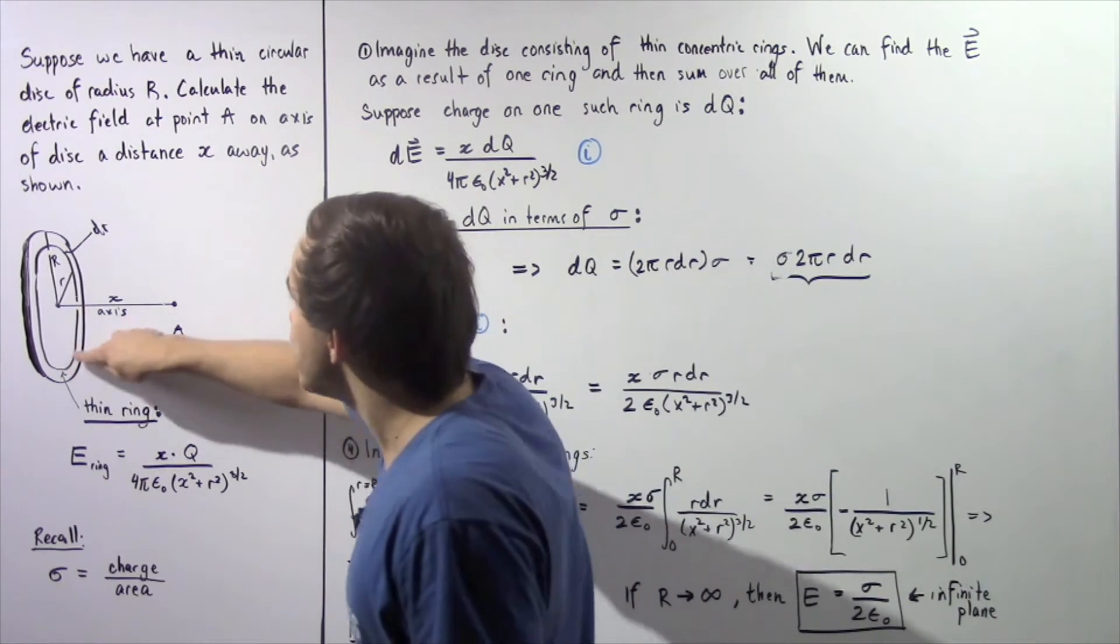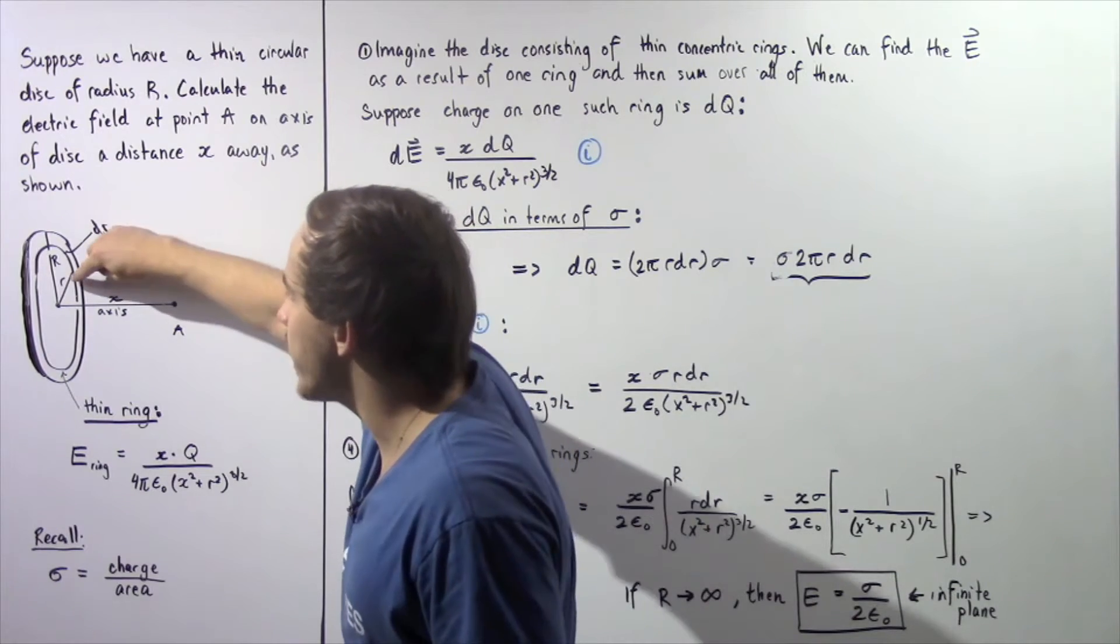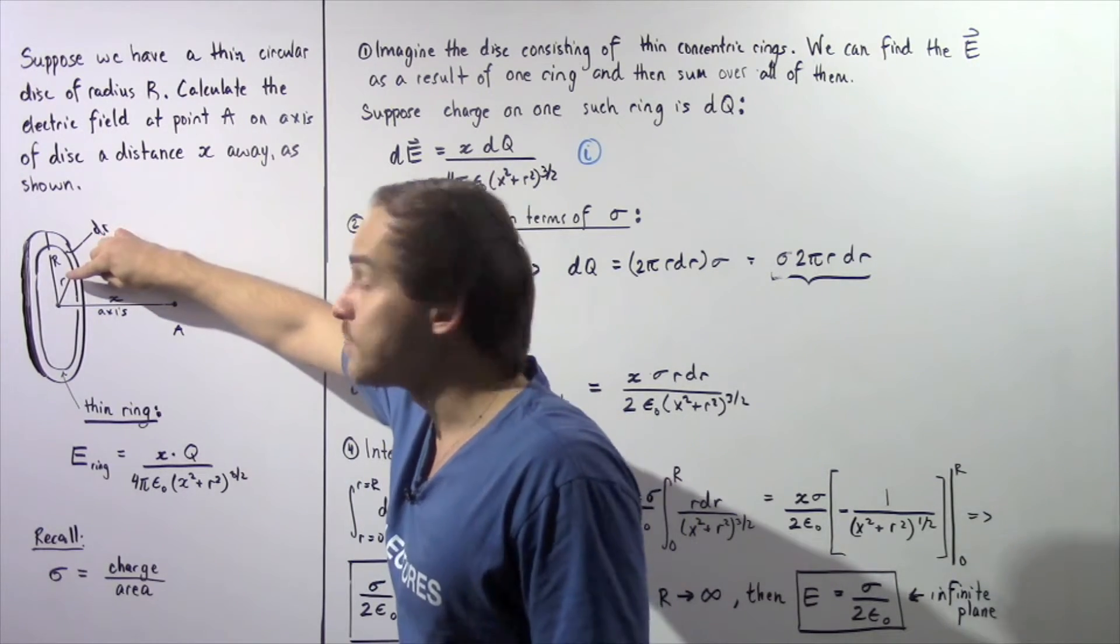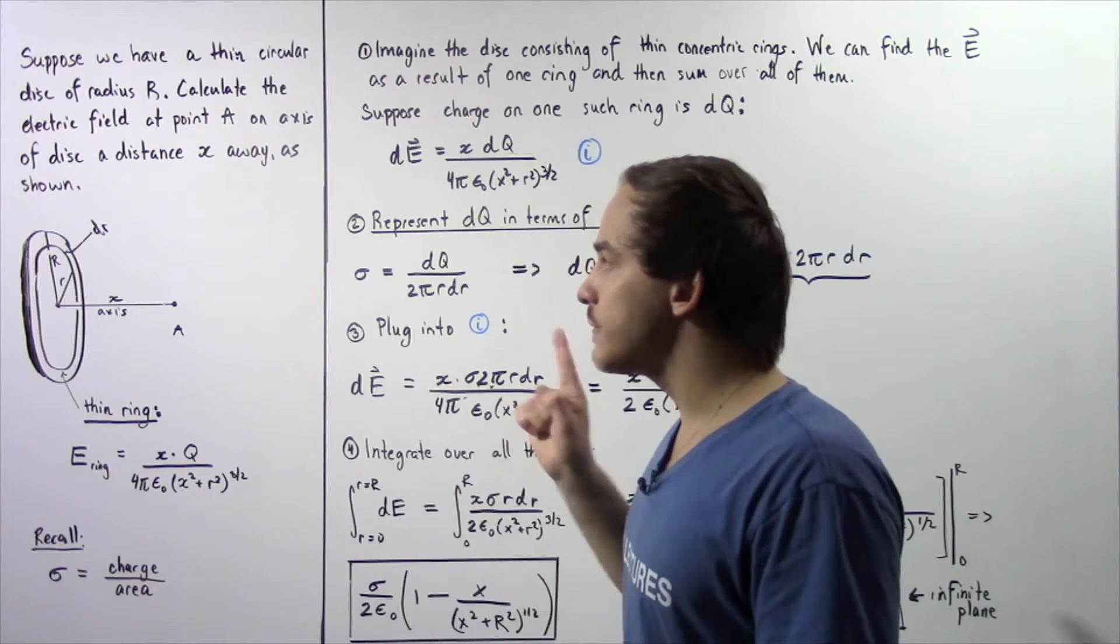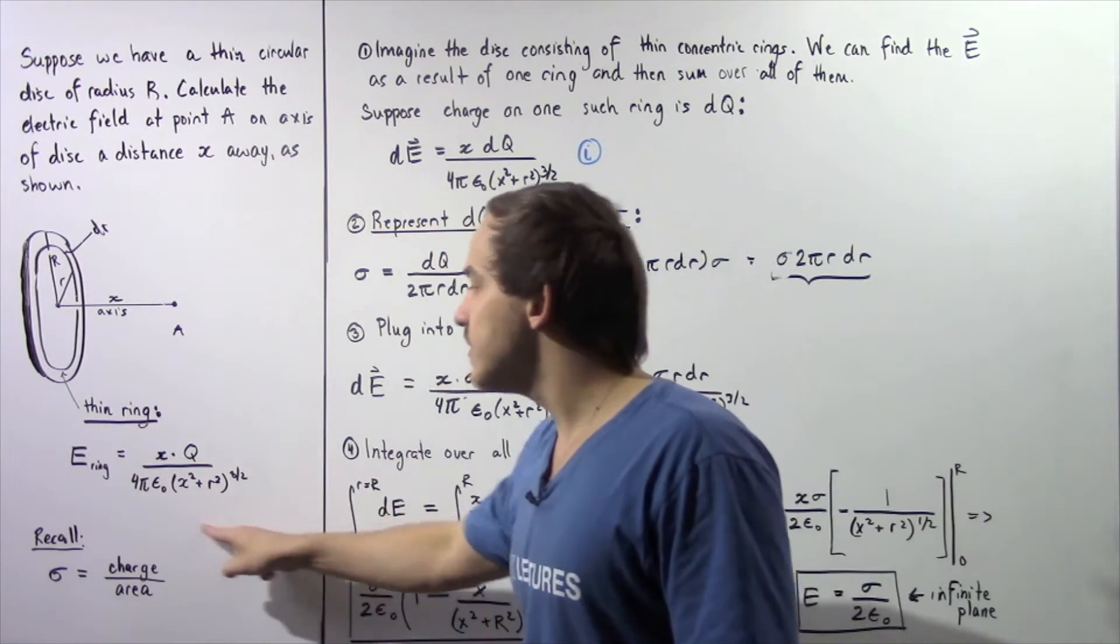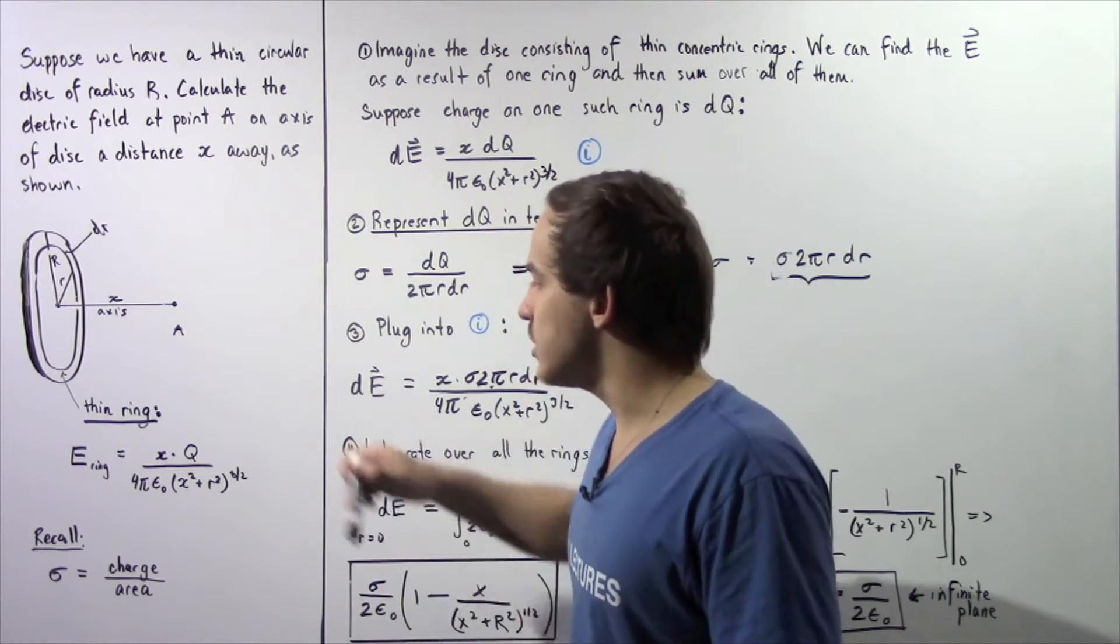One such ring is shown to be the following ring with a radius lowercase r. Now we know from the previous lecture that the electric field of such a ring is given by the following equation.